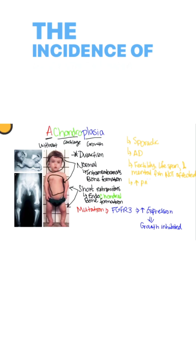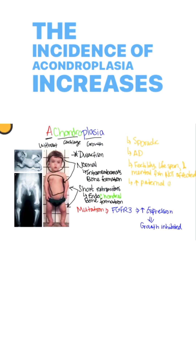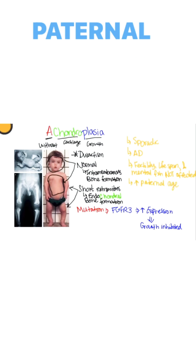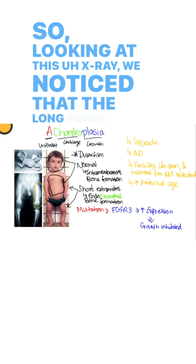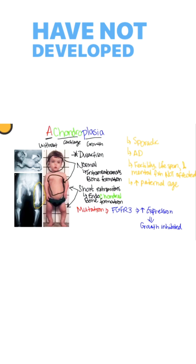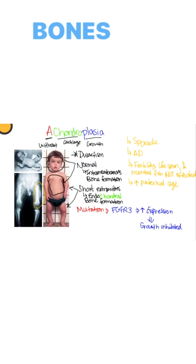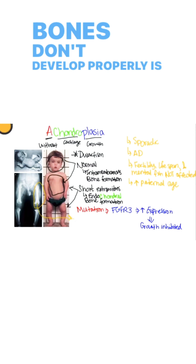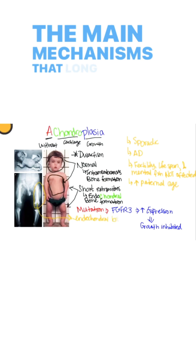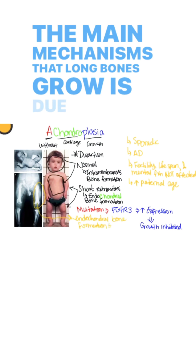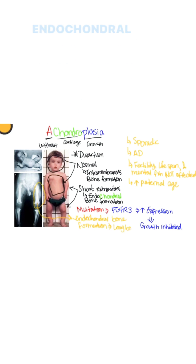The incidence of achondroplasia increases with increased paternal age. Looking at this X-ray, we notice that the long bones have not developed properly, because the main mechanism by which long bones grow is endochondral bone formation.